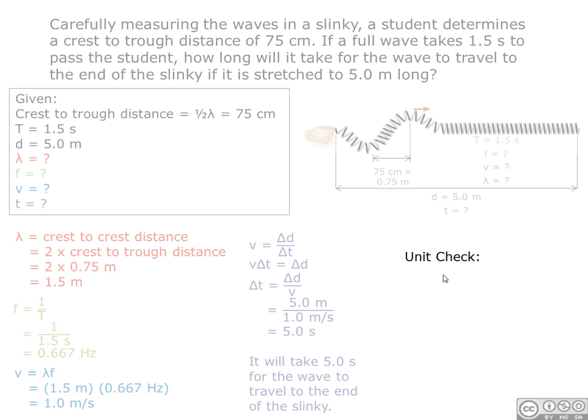Lastly, we do our unit check. Meters multiplied by hertz equals meters multiplied by 1 over seconds. This equals meters per second. Also, meters divided by meters per second equals meters times seconds over meters. The meters units cancel each other out, and we end up with the unit of seconds.